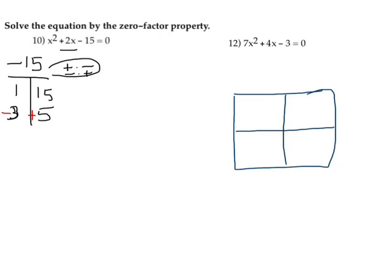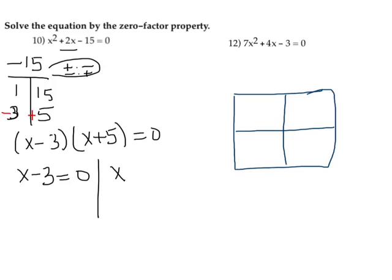So my factors in this case are going to be x minus 3 and x plus 5. And I'm going to set those factors equal to zero. Now, if I'm multiplying these two and they equal zero, then either one or the other is zero. So x minus 3 equals zero, and x plus 5 equals zero.